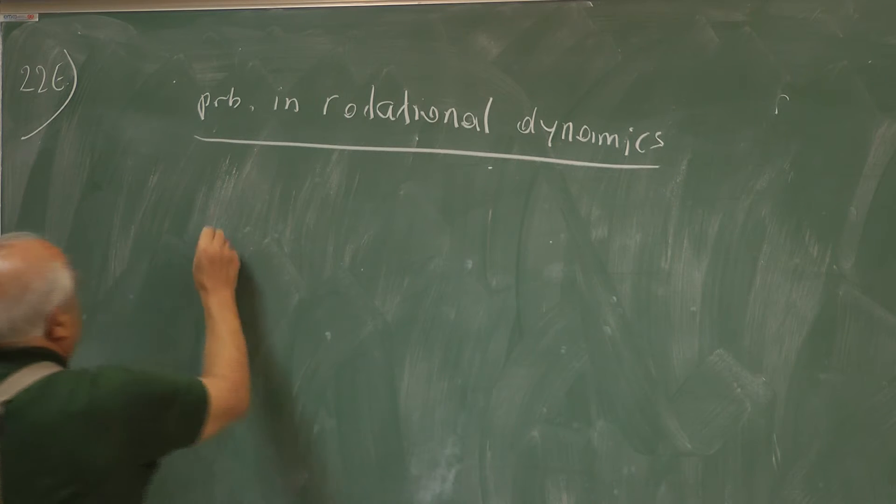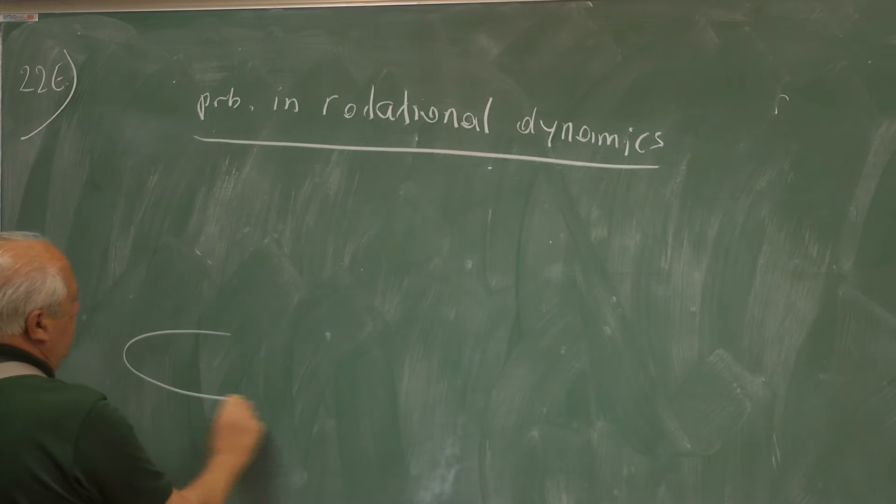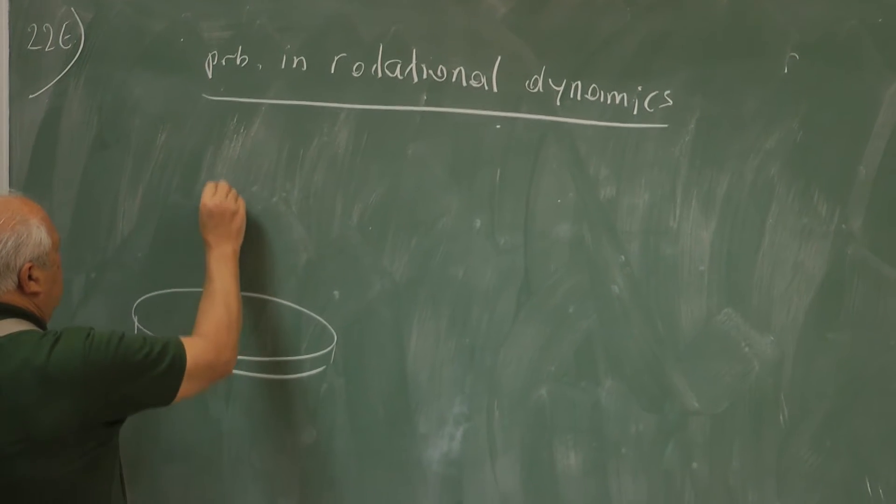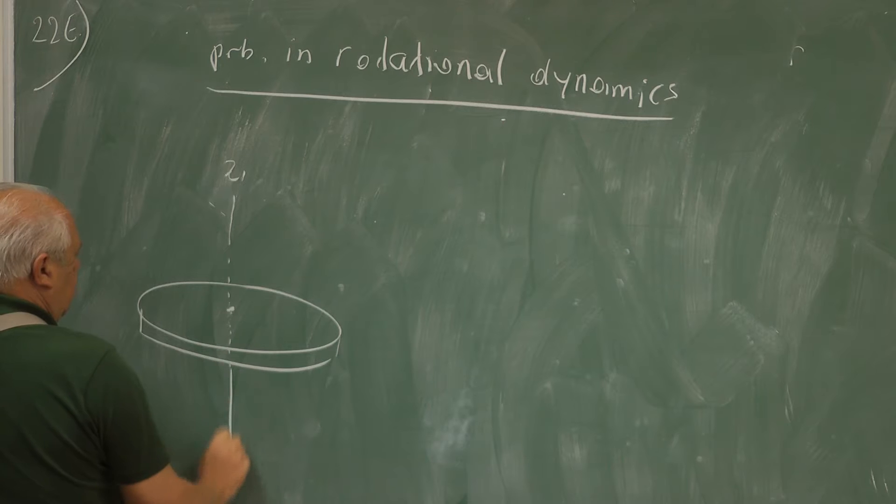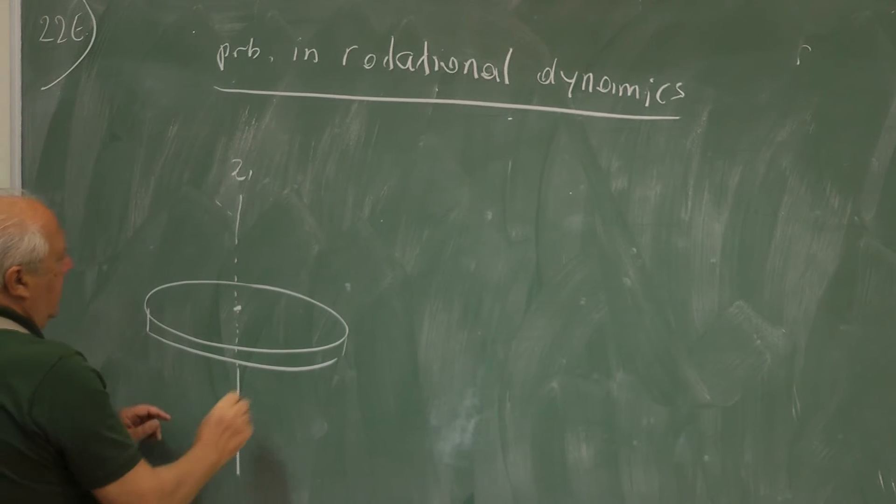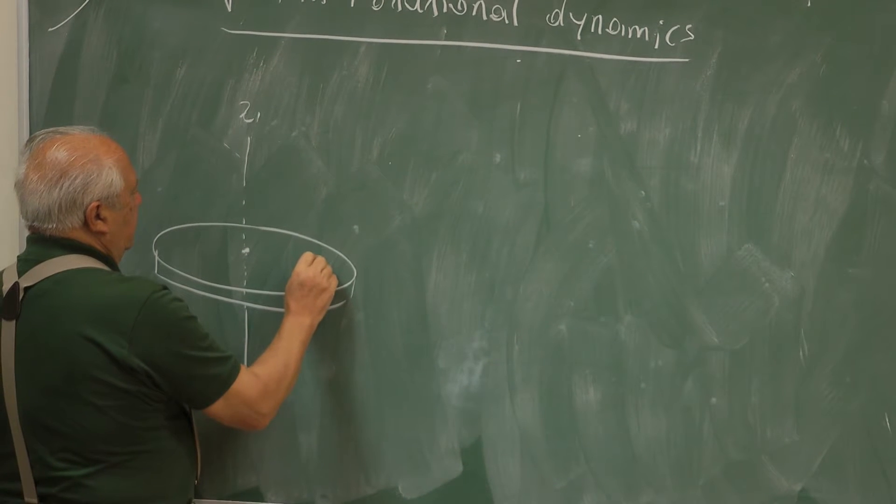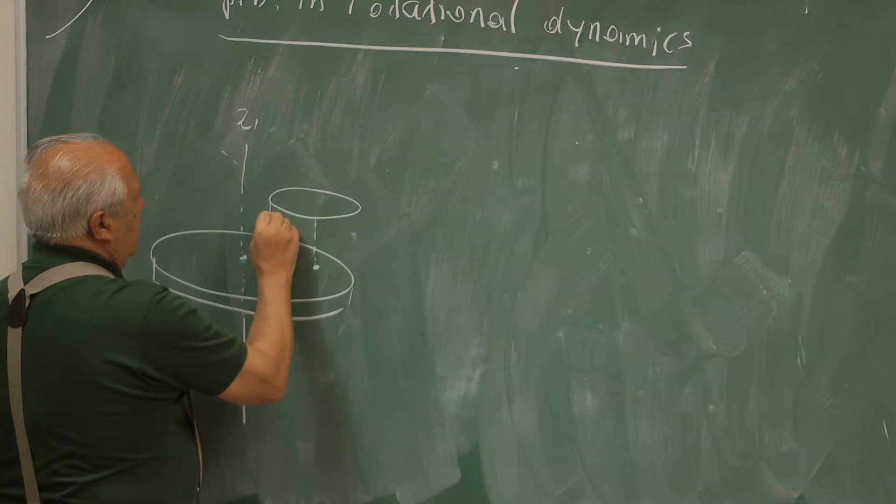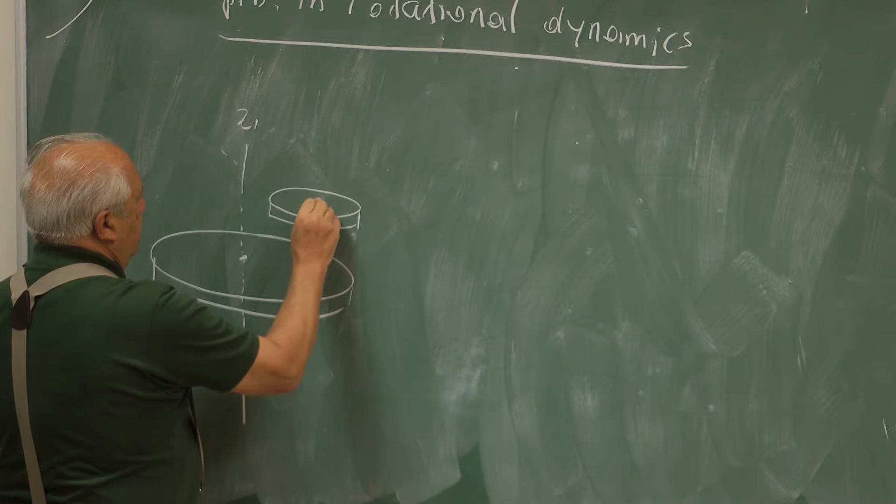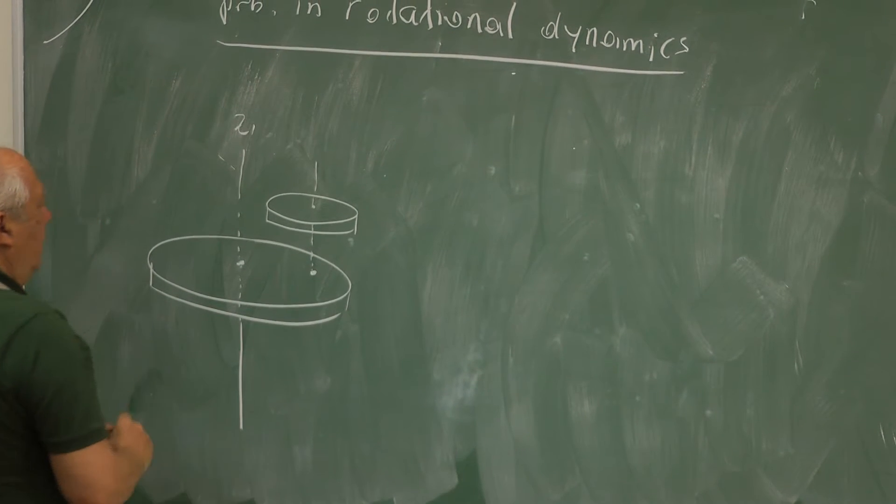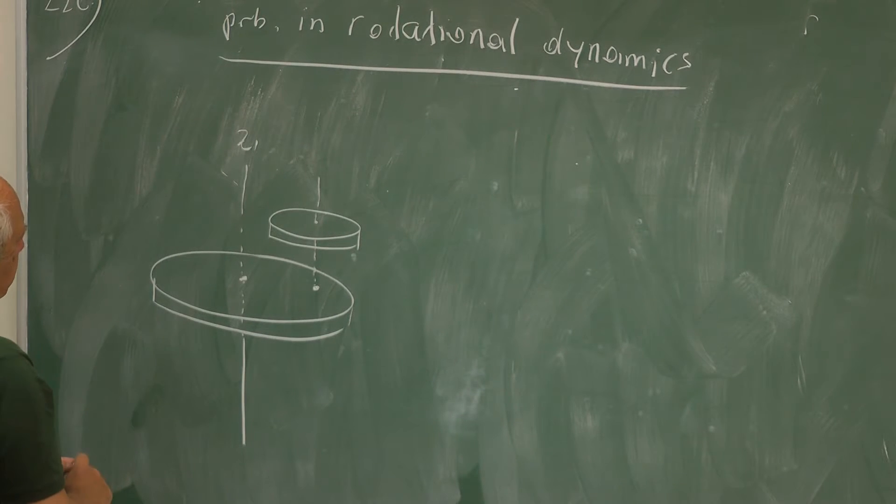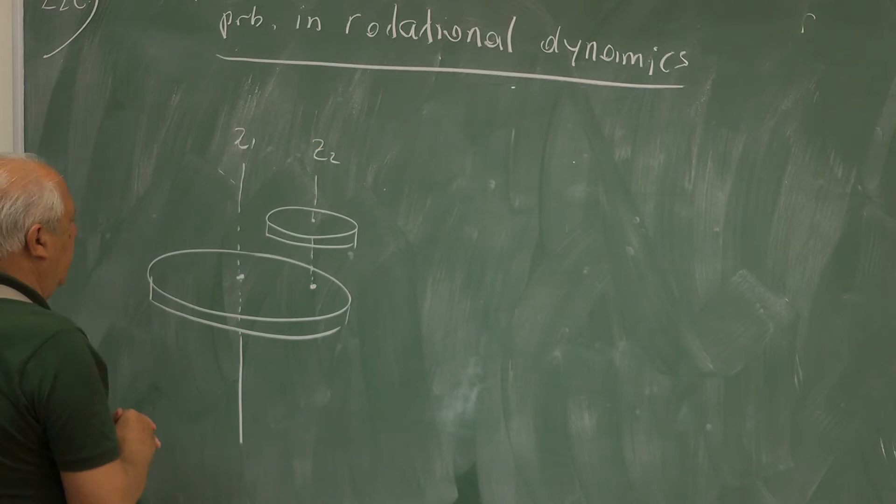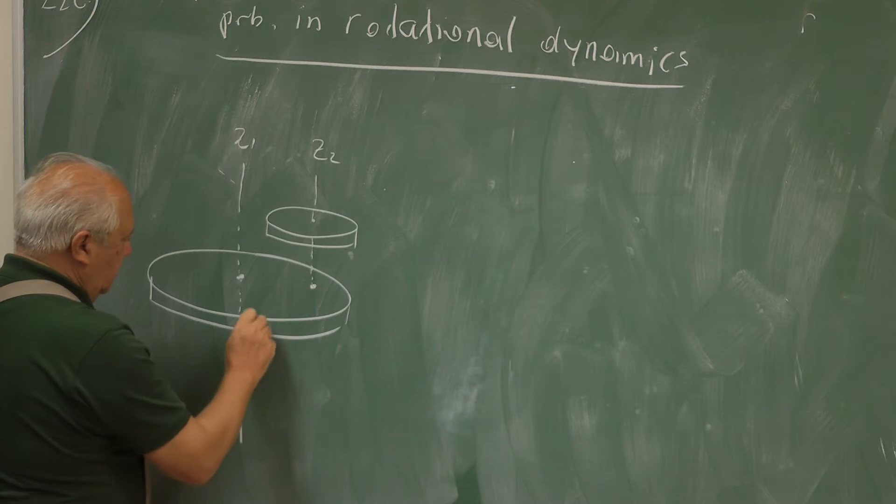There is a big disk that is free to rotate about this Z1 axis. And on it is mounted a small disk. Both are free to rotate about their respective symmetry axis. And the parameters of the problem.